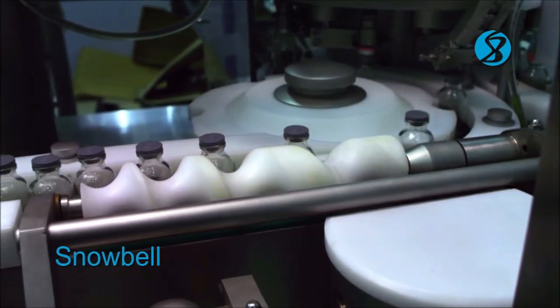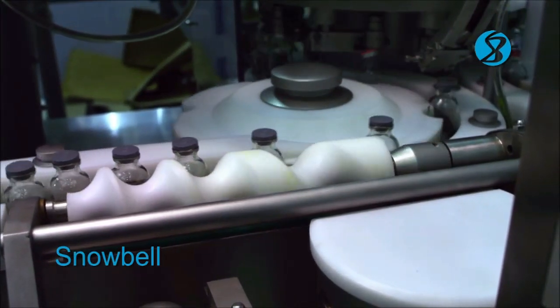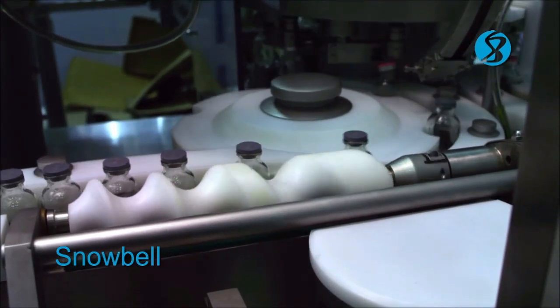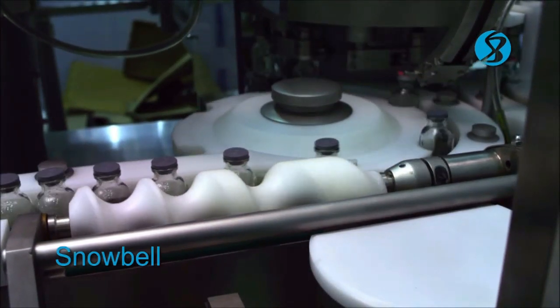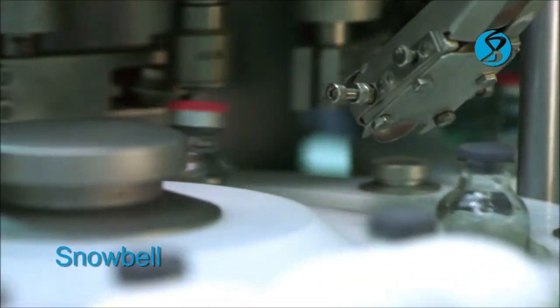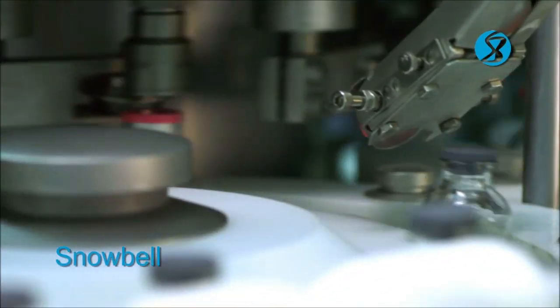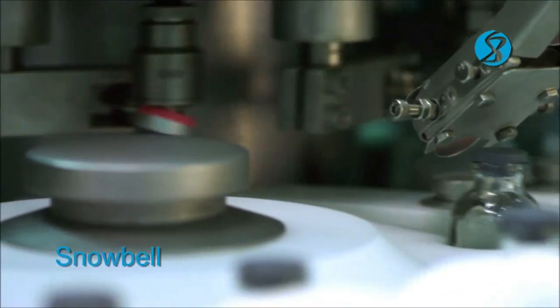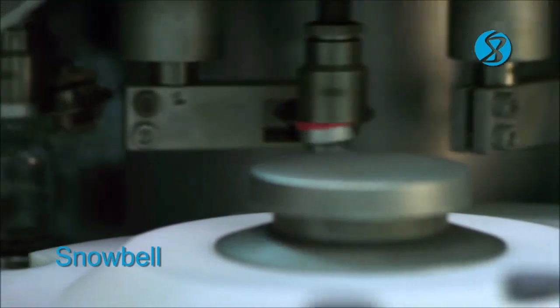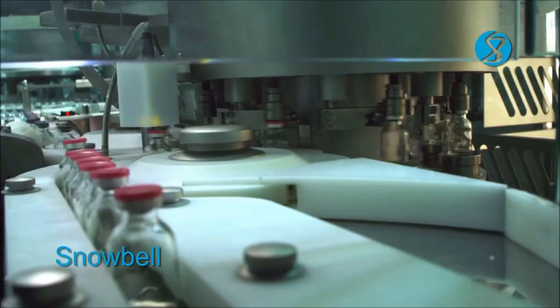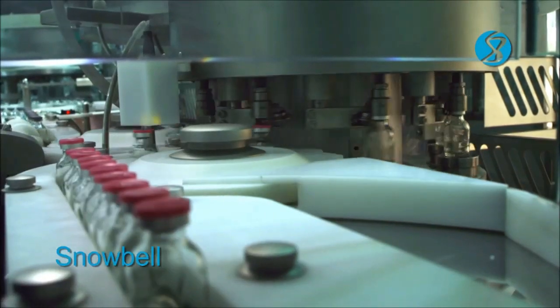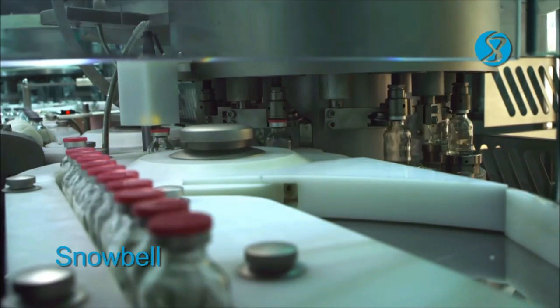Each vial is supported on a revolving spring-loaded platform and the mouth of each vial with the cap is held by a chuck. A cam driven sealing roller engages the lip of the cap and during its rotary motion effectively completes the crimping process. At the exit of the sealing drum the sealing roller disengages and the sealed vial is carried by the outfield star wheel.